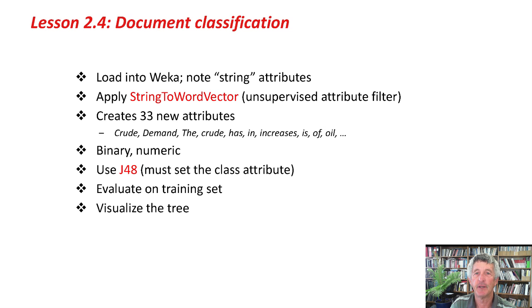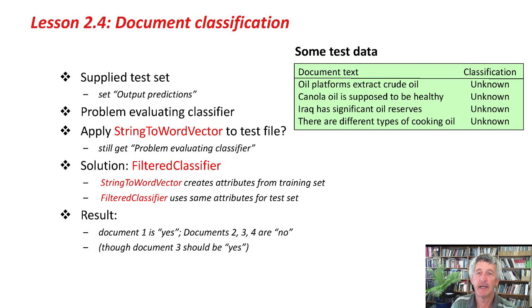This is what we've done. We loaded the data set into Weka, looked at the string attributes, applied this filter which created a lot of new attributes — one for each word — as binary, two-valued numeric attributes. We used J48, had to set the class attribute, and evaluated on the training set. Now I want to evaluate this on a supplied test set and see what the predictions are. These test documents are coded as unknown — that is, question mark in the ARFF file.